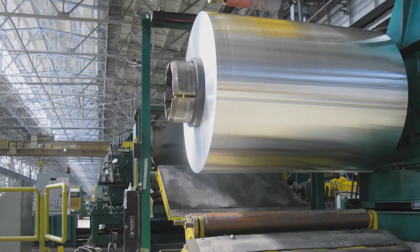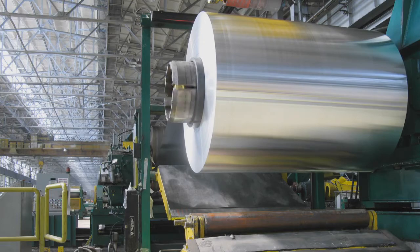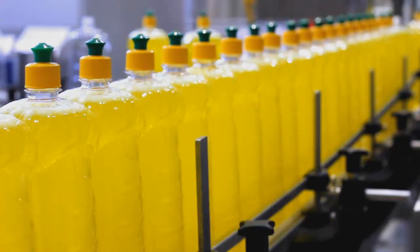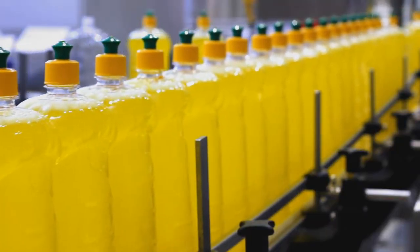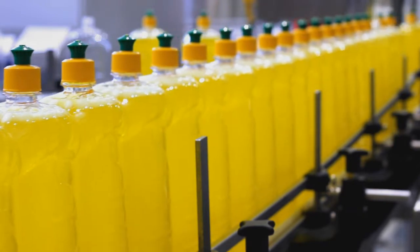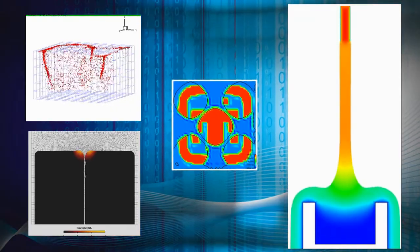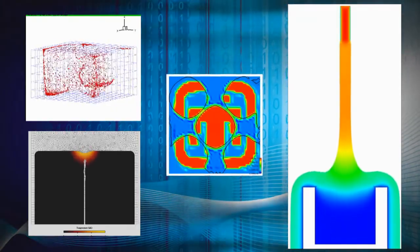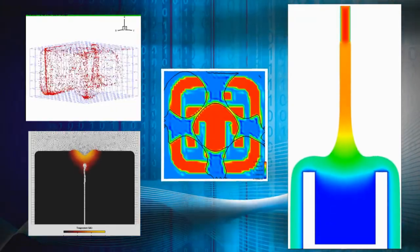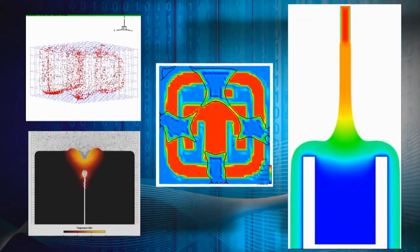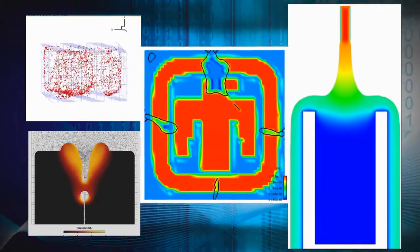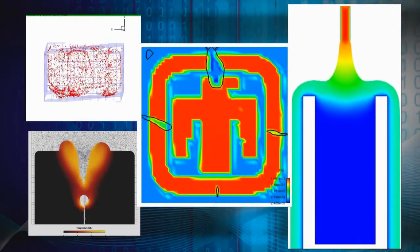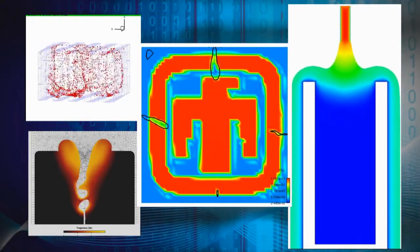Ever wonder how they make plastic wrap perfectly thin and even, or how they get the detergent into the bottle? Well, it takes rocket science — the rocket science that comes from Sandia National Laboratories' extensive work in modeling and simulation.